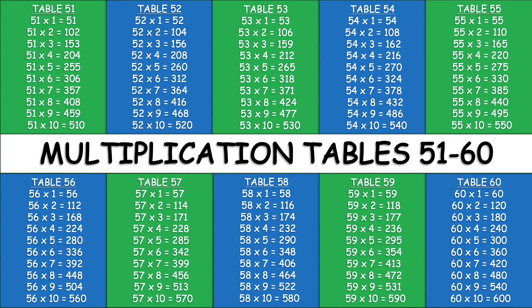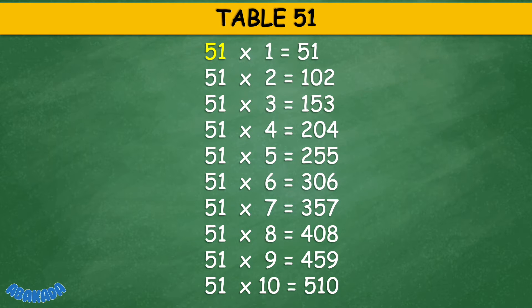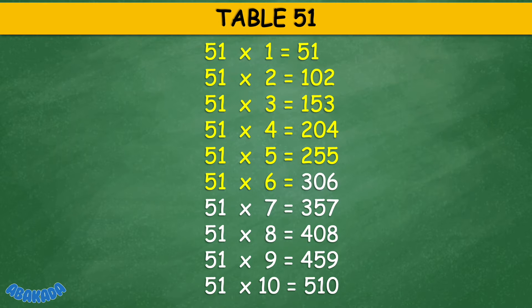Abacada Multiplication Tables 51 to 60. Table 51: 51 times 1 equals 51, 51 times 2 equals 102, 51 times 3 equals 153, 51 times 4 equals 204, 51 times 5 equals 255, 51 times 6 equals 306, 51 times 7 equals 357, 51 times 8 equals 408, 51 times 9 equals 459, 51 times 10 equals 510.